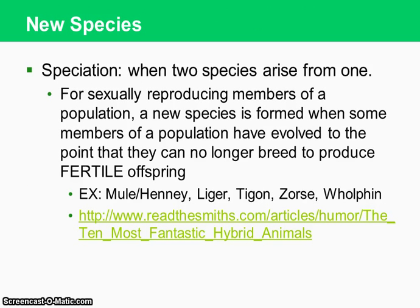New species — speciation occurs — that's the word we give for the formation of a new species from one origin. For sexually reproducing members of a population, a new species is formed when some members have evolved to the point that they can no longer breed to produce fertile offspring. You know a new species has formed when they all were once able to interbreed, but because of some kind of isolation, these two species have evolved differently and separately. Once you bring them back together and they mate, they might be able to mate anatomically, but if they have an offspring, it is not going to be fertile — they will not be able to have viable offspring themselves.